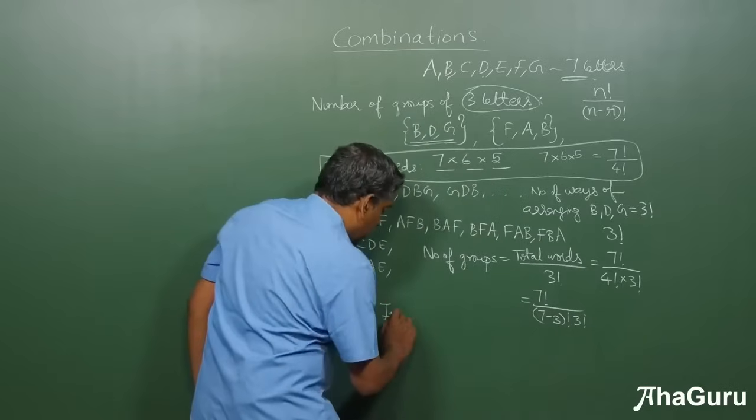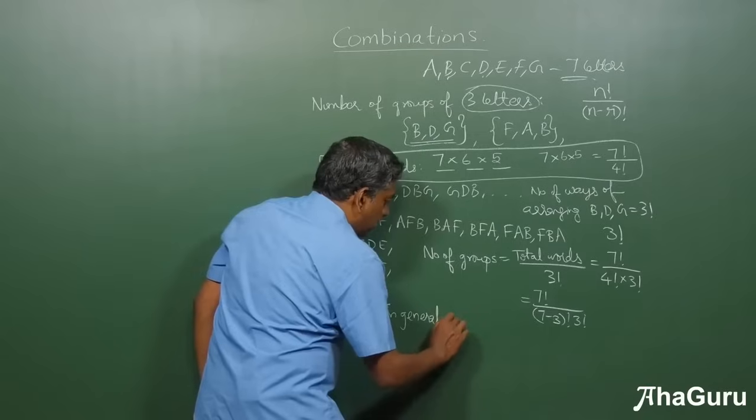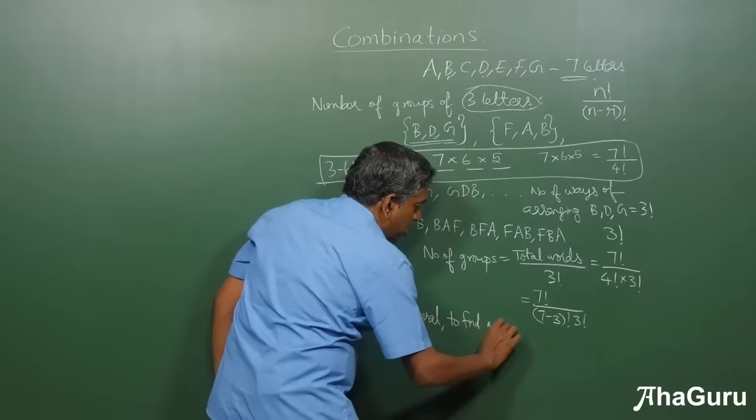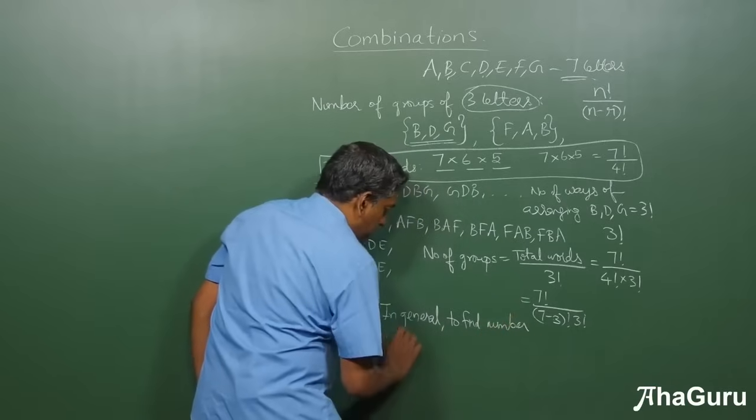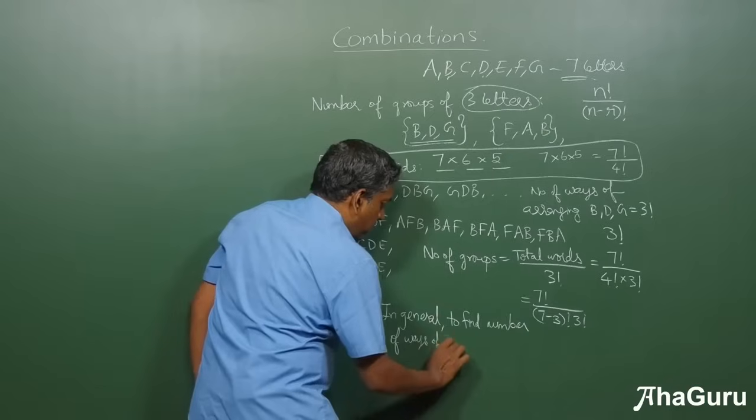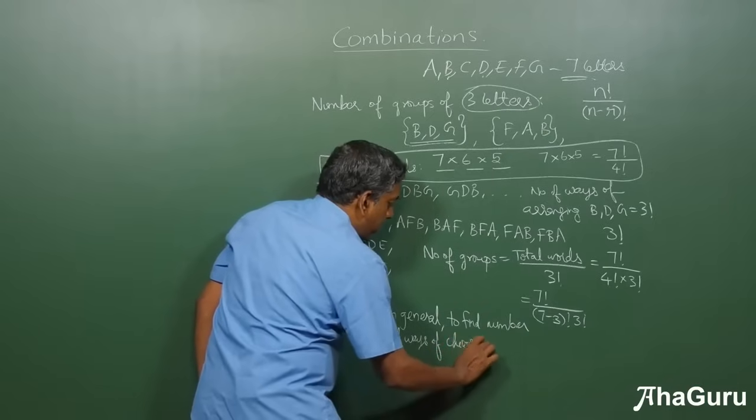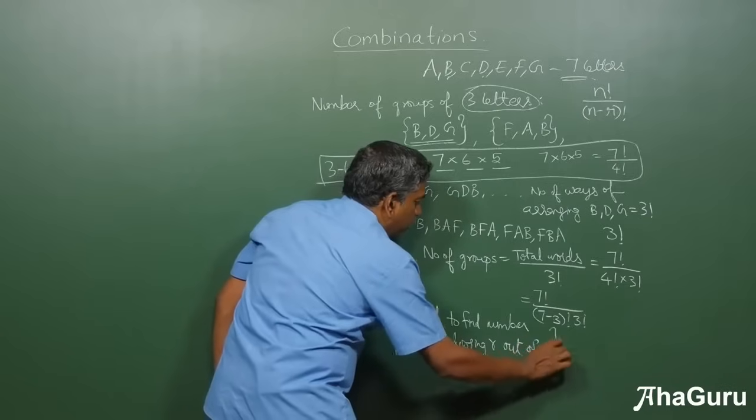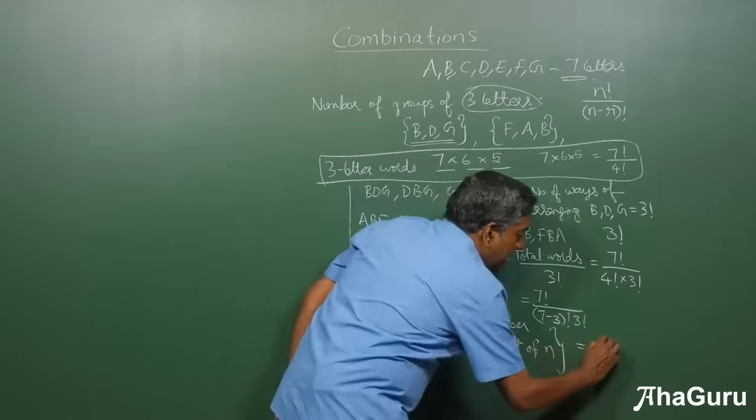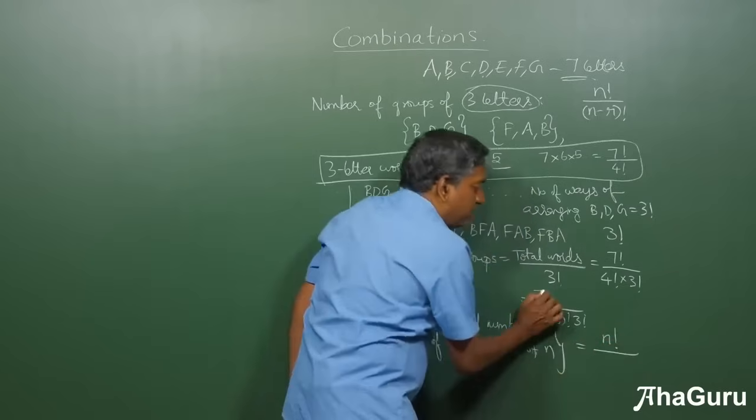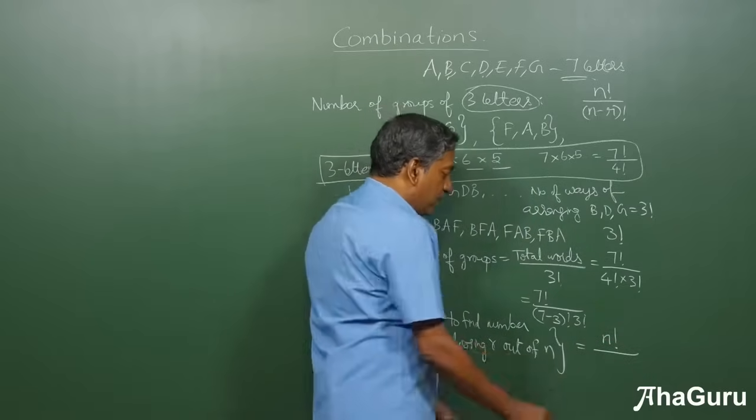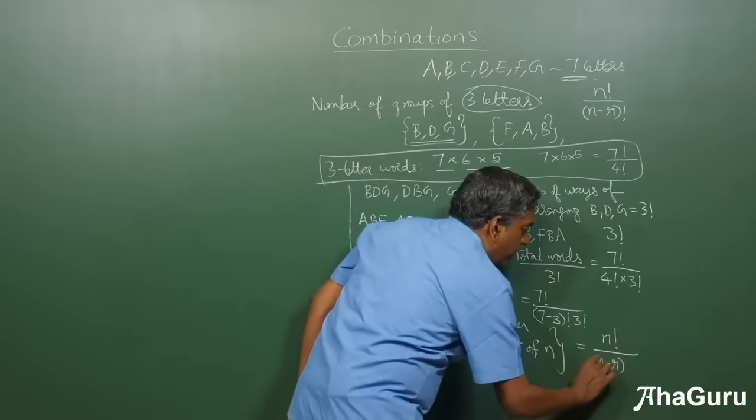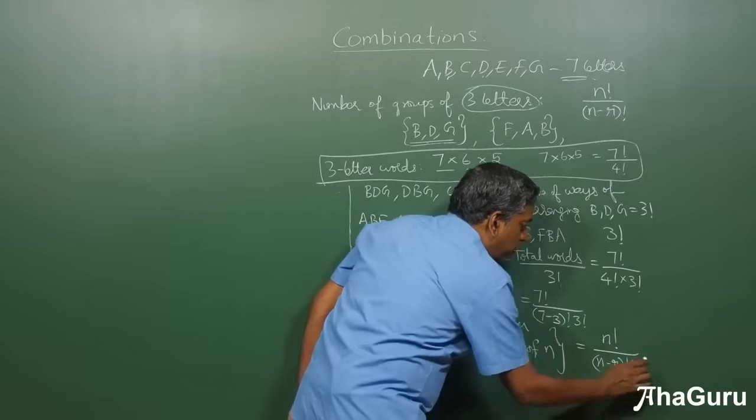Now, in general, to find number of ways of choosing r out of n will be n factorial. Remember, n is our 7 in the previous example, divided by n minus r factorial times r factorial.